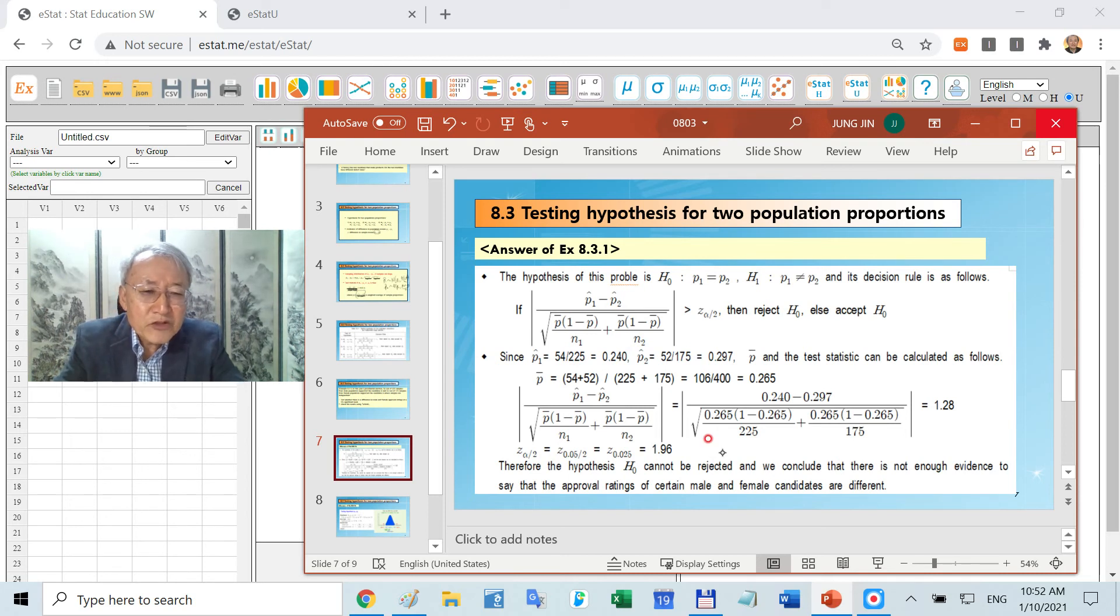Therefore, test statistic is 1.28. As you know, if your significance level is 5%, the critical value is plus minus 1.96. Therefore, you cannot reject H0.